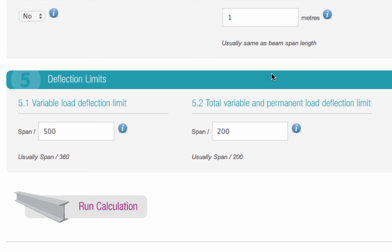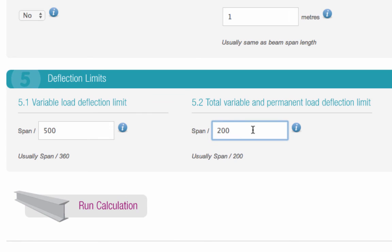We recommend that the total variable and permanent load deflection limit doesn't exceed the span length divided by 200. However, some engineers recommend a lower limit of 250.